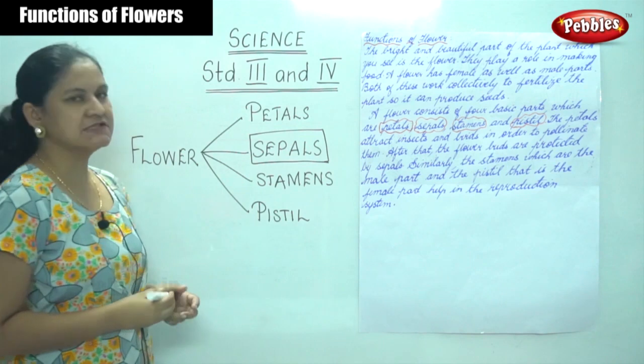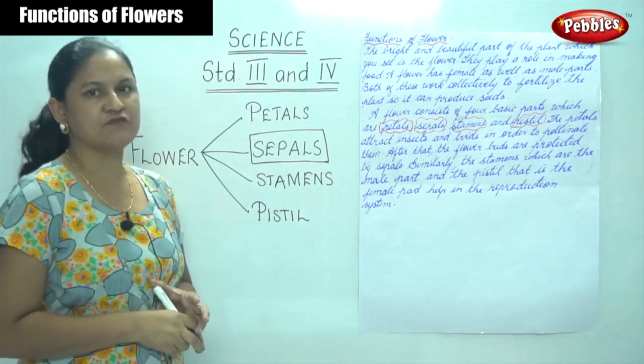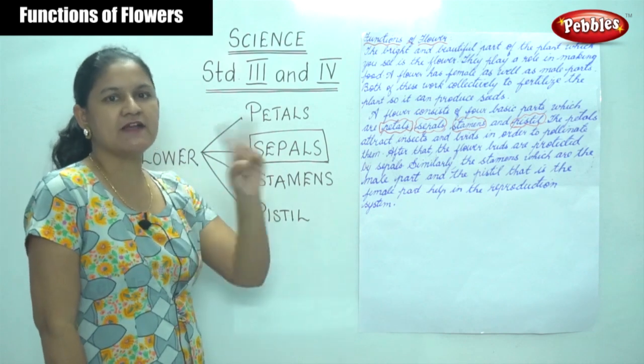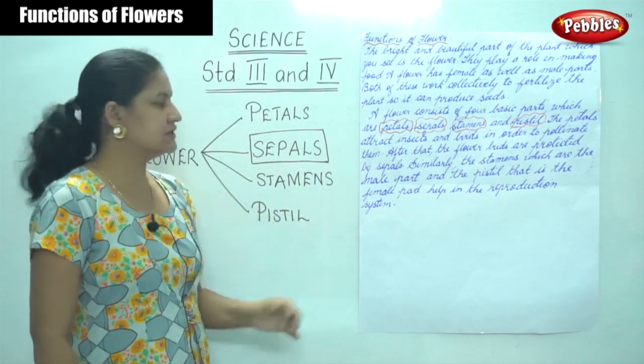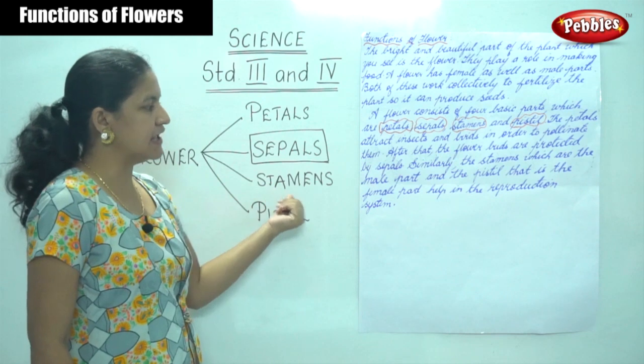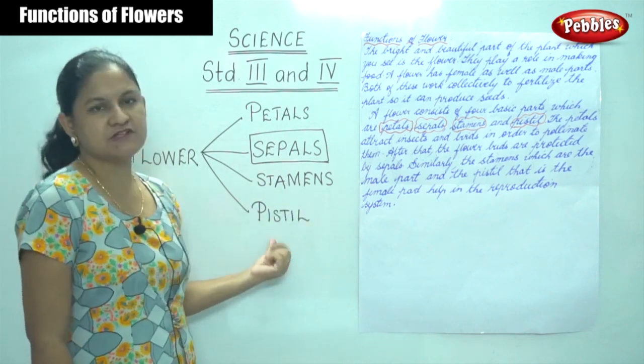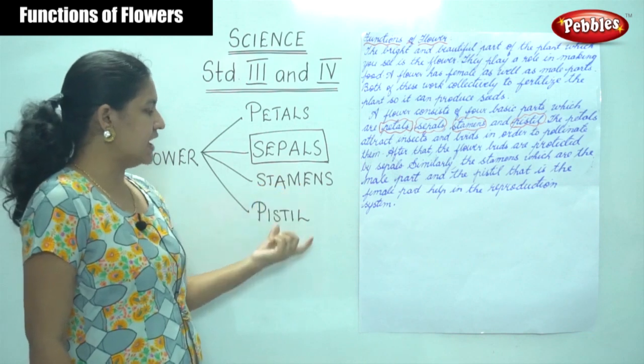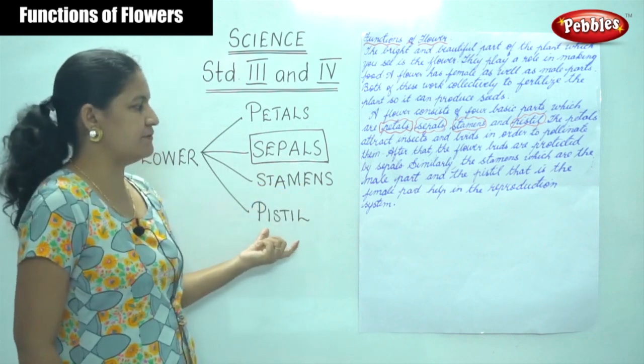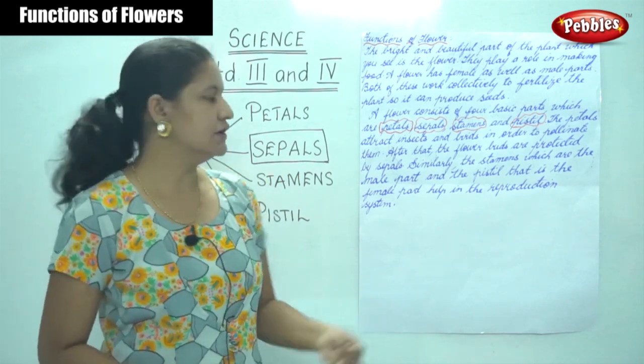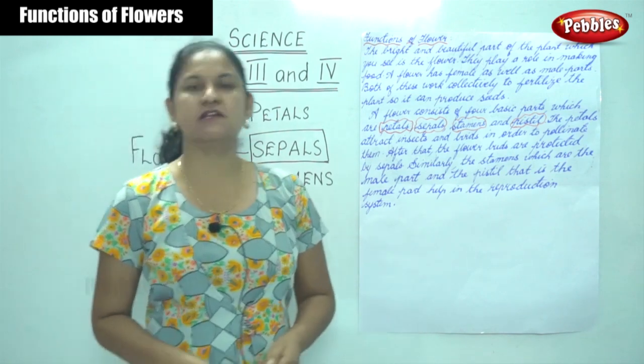The stamens are the male part of the flower. We have already seen that a flower has male and female parts, and the stamens are the male part and the pistil is the female. Both of them actively work to help in the reproduction system.